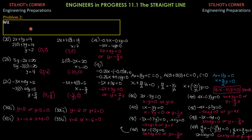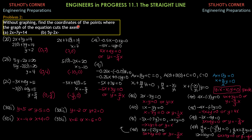We have here Problem 2: Without graphing, find the coordinates of the points where the graph of the equation cuts the axis. So, we are talking here of the x and the y axis. First, 2x + 7y = 14. Here we just set — because on the y-axis, x is 0, and on the x-axis, the line cuts with y = 0. So, all you have to do is substitute x = 0 and solve for y, then substitute y = 0 and solve for x. That's the procedure for Problem 2.